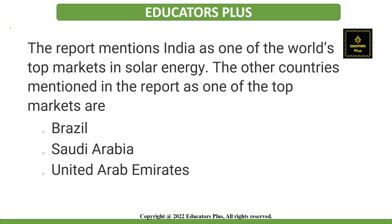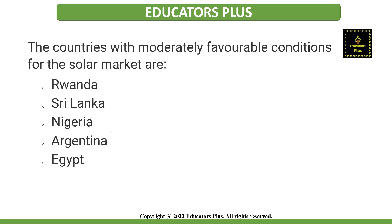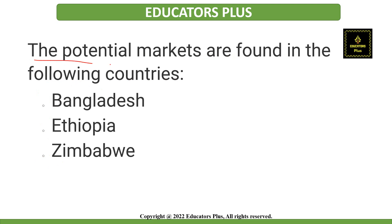Now let's discuss one of the important reports of the International Solar Alliance, launched in the year 2020 — the Ease of Doing Solar Report 2020. This report has covered 80 countries and identifies the high solar energy performers in 2020. The report mentions India as one of the world's top markets in solar energy. Other countries mentioned as top markets include Brazil, Saudi Arabia, and the United Arab Emirates. Countries with moderately favorable conditions for the solar market include Rwanda, Sri Lanka, Nigeria, Argentina, and Egypt.